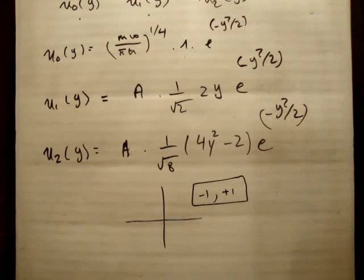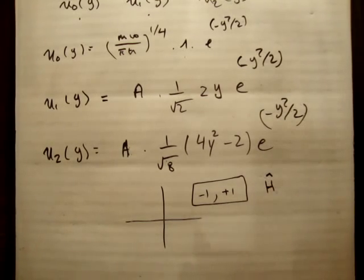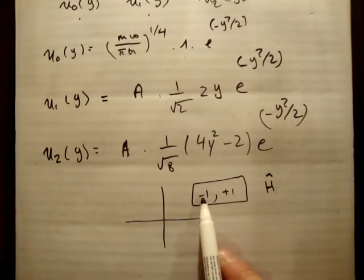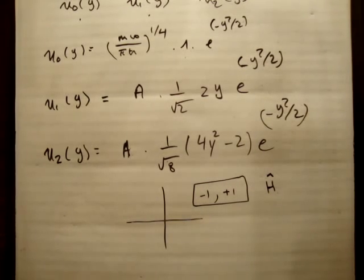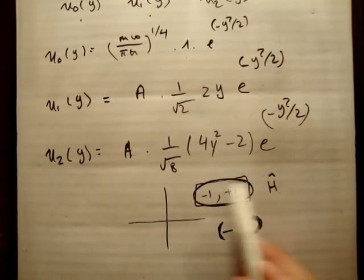And if something commutes with the parity operator, that means that the eigenfunctions of this operator, in this case the Hamiltonian, will be even or odd. So, as in, minus 1 for odd and plus 1 for even. And it turns out that the Hamiltonian, when you put in minus x or whatever for each of your values, it commutes basically with your parity operator, which is this bad boy here.